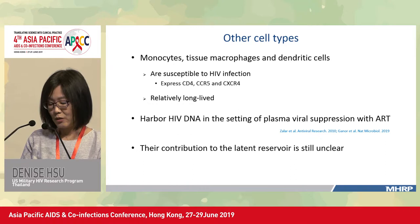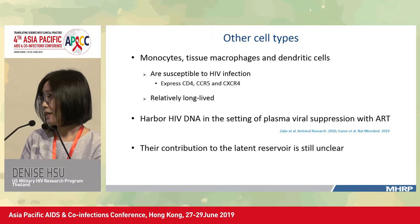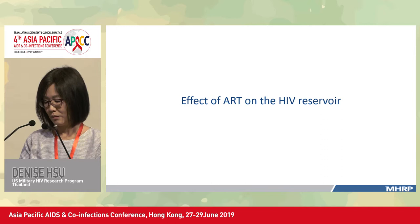These cells have been shown to have HIV DNA in the setting of plasma virus suppression on ART, and there is evidence that HIV transcription can occur in macrophages with production of HIV RNA as well as viral proteins including P24. However, the contribution to the latent reservoir is still unclear at this stage.